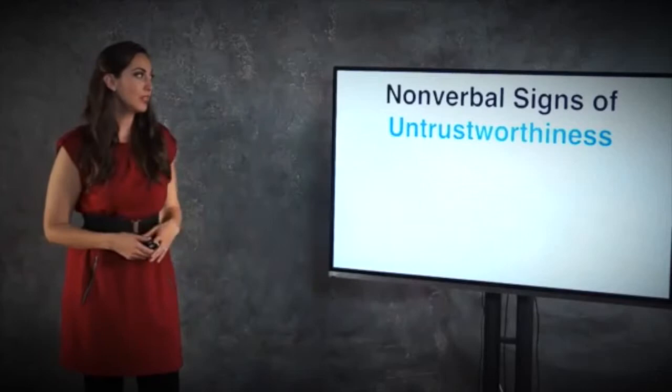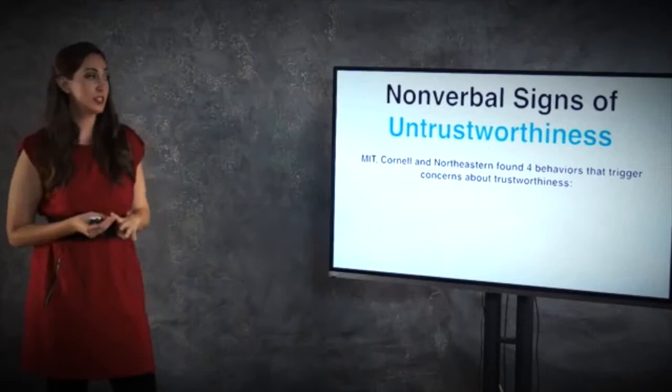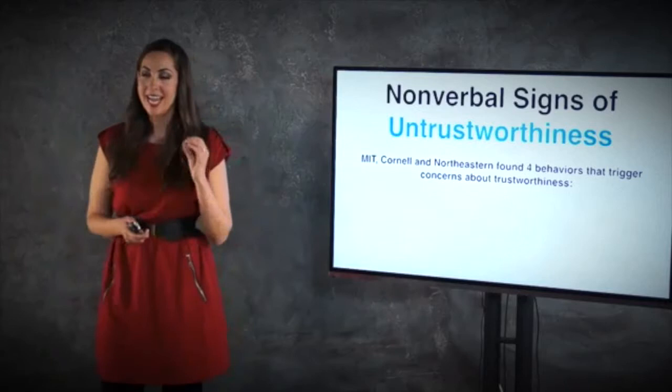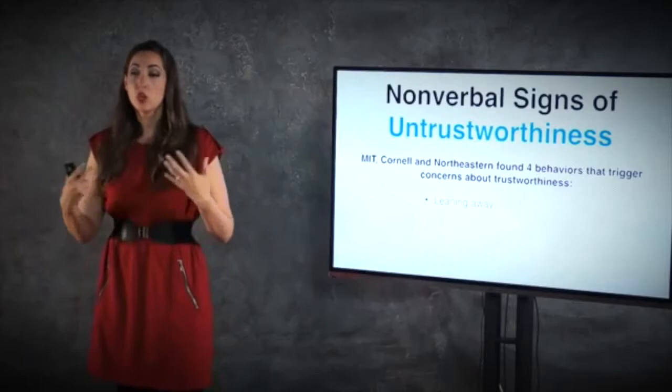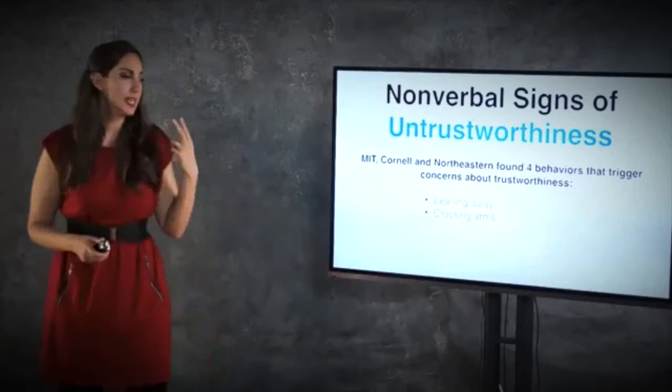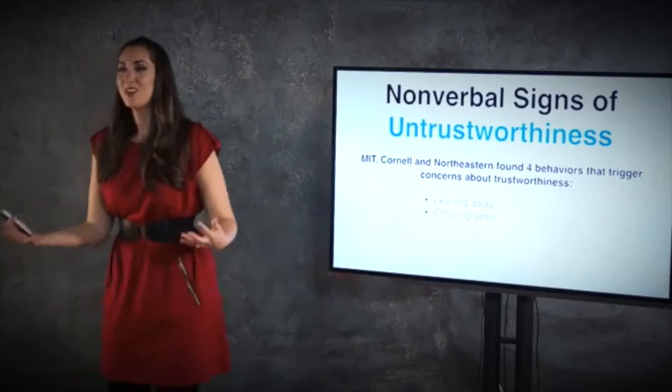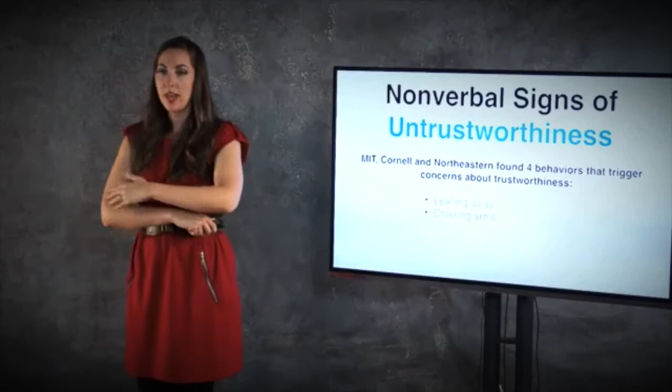All right, nonverbal signs of untrustworthiness. So a couple different studies here, MIT, Cornell, Northeastern, all found four behaviors that trigger concerns about trustworthiness. Very specifically, they replicated this over and over again. Here is what you want to avoid. Leaning away. The second someone leans away in a negotiation, a business situation, on a date, that triggers untrustworthiness. So when you are on a date and you feel yourself leaning back in a way, you want to be very careful because that's showing that you are not to be trusted. Unconsciously this triggers their warning signs. Second, crossing arms. I barely even talk about crossing arms, so I think that we all know that we need to keep our arms uncrossed. And the reason for this, it has everything to do with trust. When we cannot see someone's torso, we know that we cannot have a connection with them. So that blocking behavior, opening up your body, is the best way to have that heart-to-heart connection. And fronting is a great way to do this as well. Toes, torso, and top, and leaving your torso open.